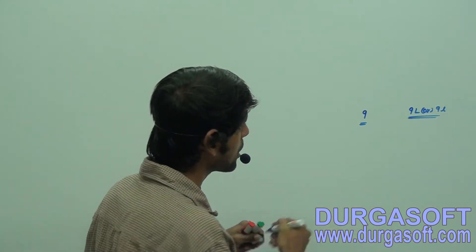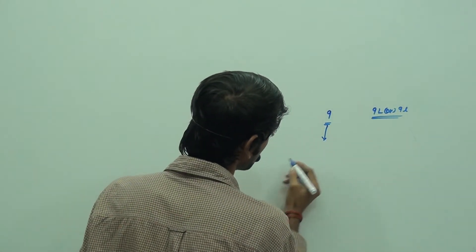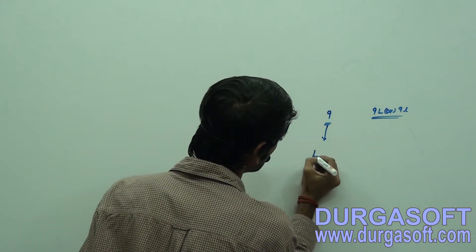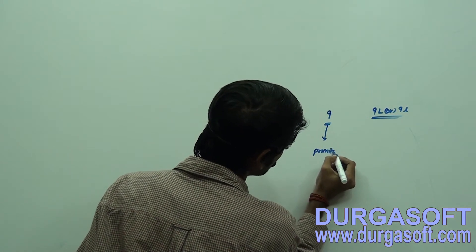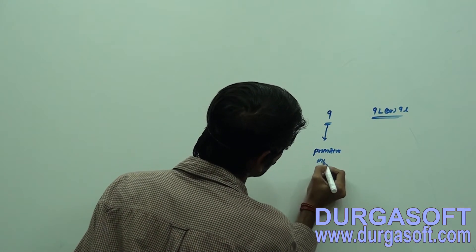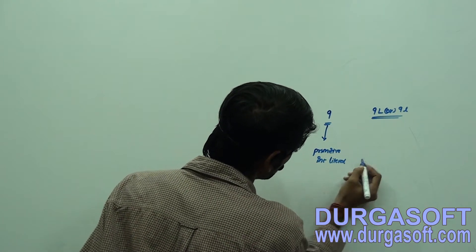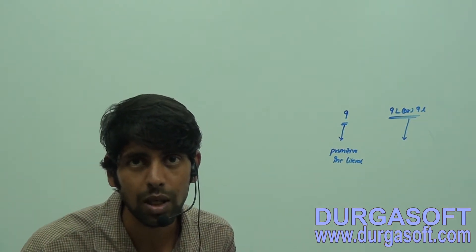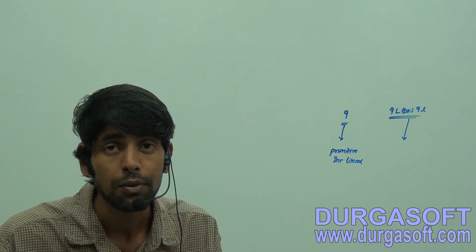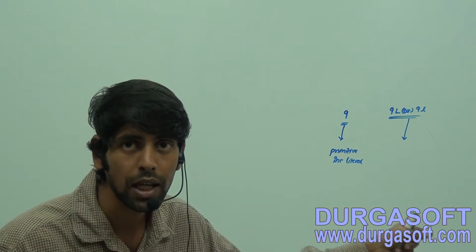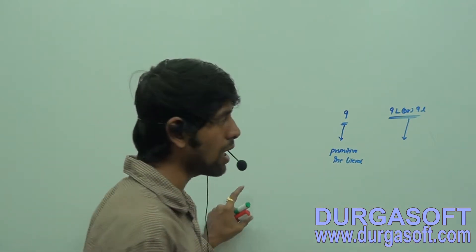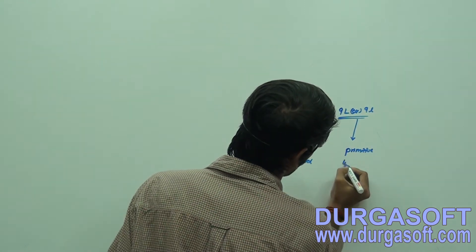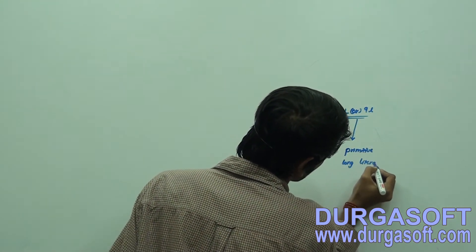The first is a primitive int literal. The second is a primitive long literal. If we suffix a particular literal with small L or capital L, then it is going to behave as a primitive long literal.